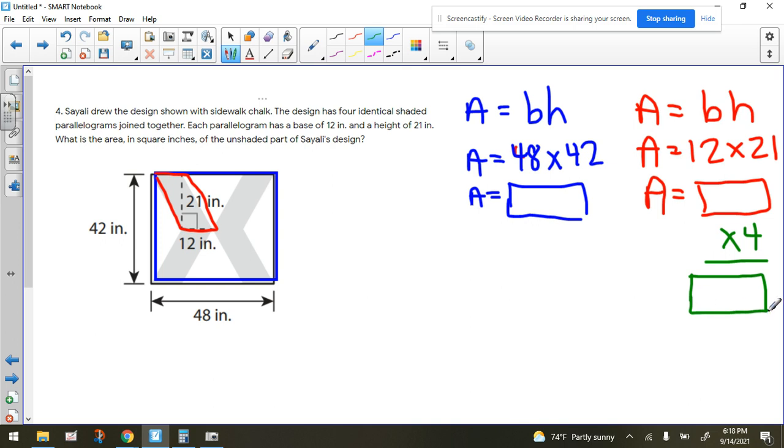That won't be the answer. What you need to do, it says, remember it says, we're interested in what is the area in square inches of the unshaded part. So in other words, the white part.